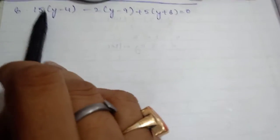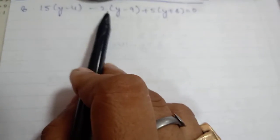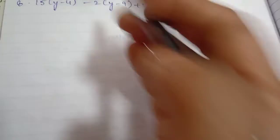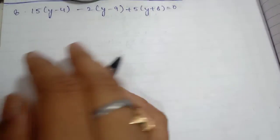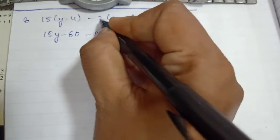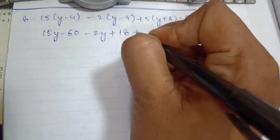Multiply 15 with (y-4), -2 with (y-9), and 5 with (y+6). So here we have 15y - 60 - 2y, and this minus minus becomes plus 18, plus 5y + 30 = 0.